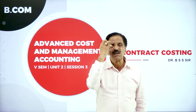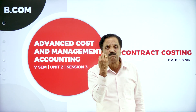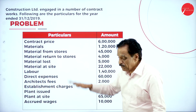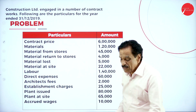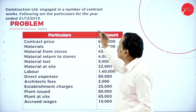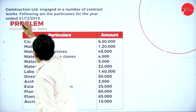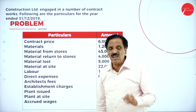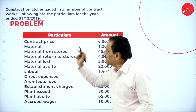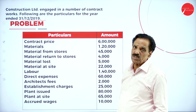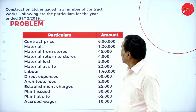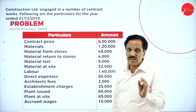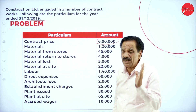This formula should always be remembered. We will now move on to the problem. The contract account is for the year ending 31st December 2019. The contract price given is 6 lakh.